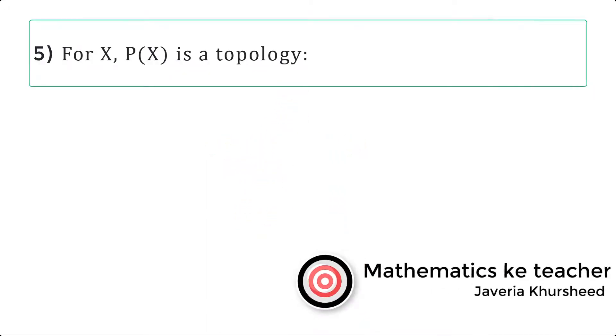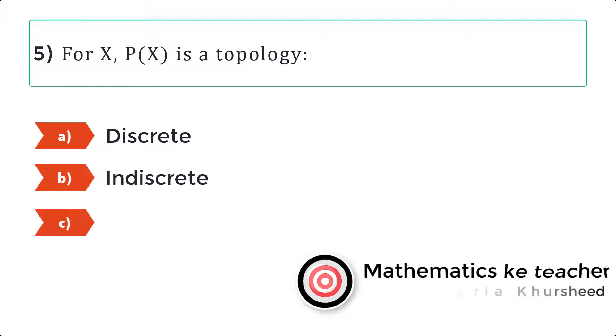Question 5: For X, P of X is a topology. Options: A. Discrete, B. Indiscrete, C. Complete, D. Basic.